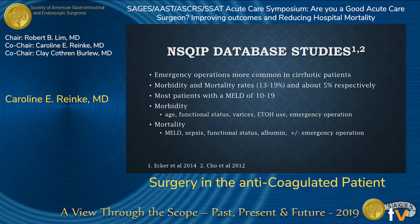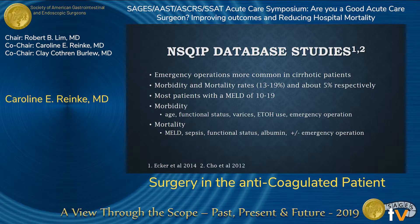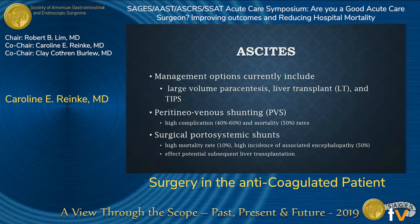There are two NSQIP database studies. Ascites is a variable recorded in the NSQIP database, as well as some laboratory values that can help you calculate a MELD. Emergency operations are more common in cirrhotic patients, again with high morbidity and mortality rates. Most of the patients in these series have a MELD of 10 to 19, and risk factors for increased morbidity and mortality are identified.